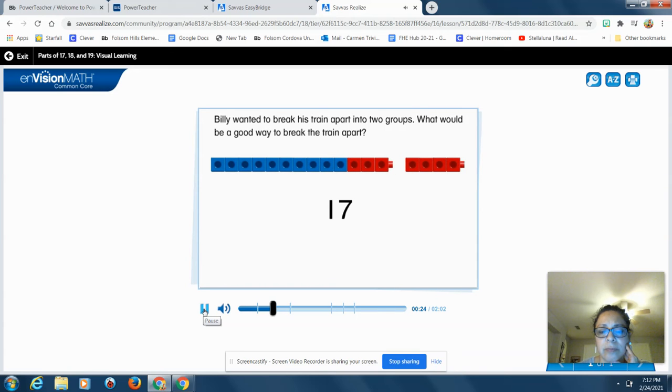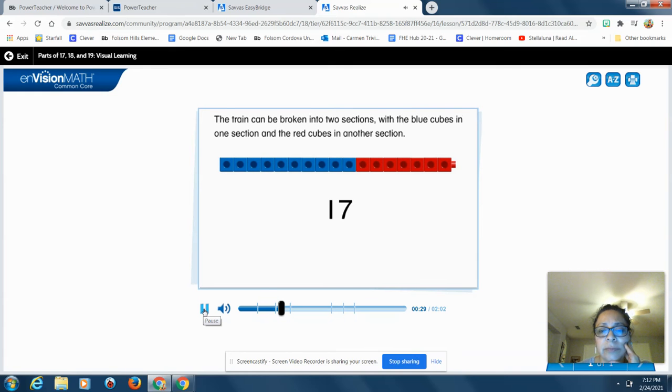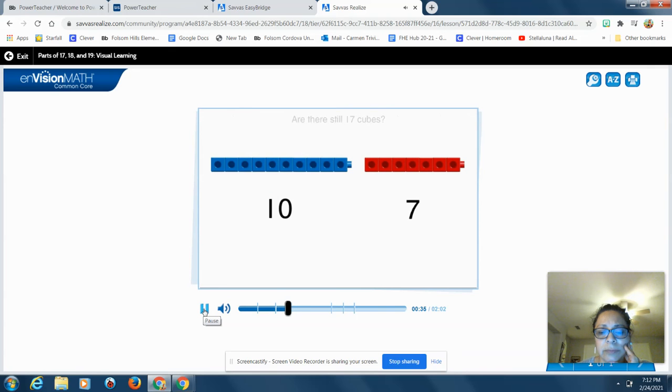What would be a good way to break the train apart? Think about it. What would be a good way to break this train apart and show two different groups? There are two different colors, so the train can be broken into two sections with the blue cubes in one section and the red cubes in another section. Are there still 17 cubes? Yes, there are still 17 cubes, but now they are in two sections.